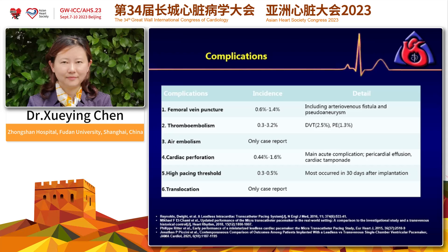Another complication is cardiac perforation. For conventional leads, the rate is around 1% to 2%. For Micra, published data shows the incidence is around 0.5% to 1.6%. For conventional pacemakers, cardiac perforation is not always very severe — it can be chronic rather than acute. But for Micra, it may cause very severe outcomes like cardiac tamponade, sometimes requiring surgery or causing life-threatening results. So we should take care of this complication.